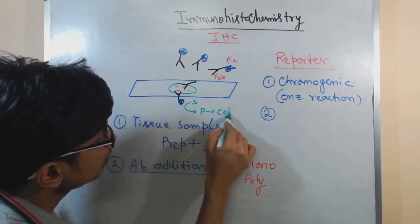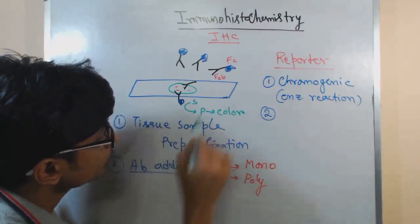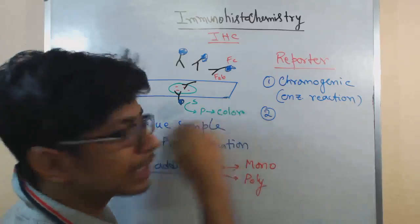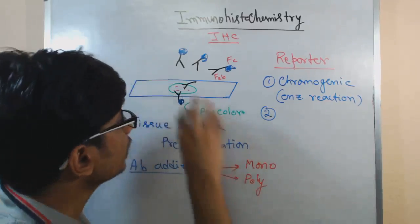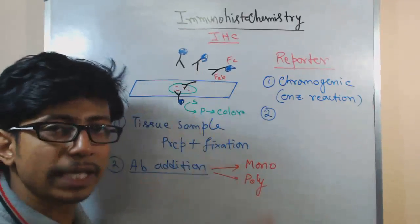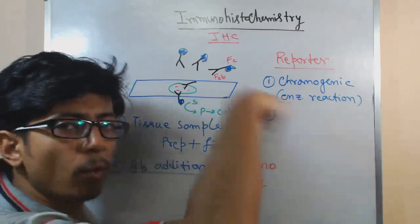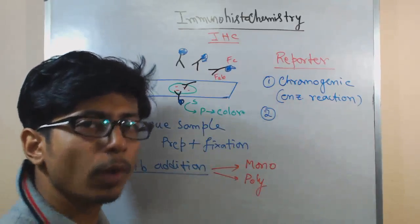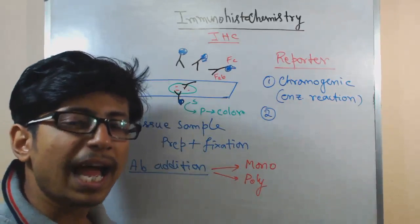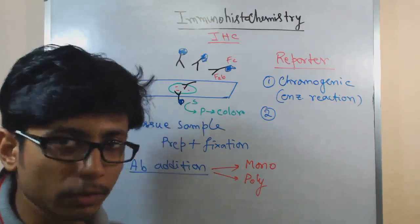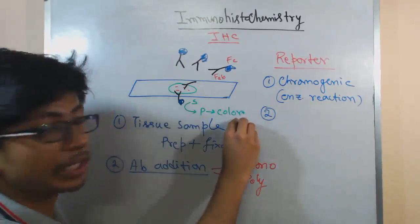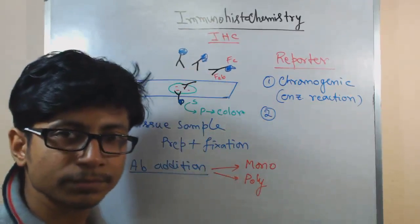Then we add the substrate of that enzyme, and the enzyme will act on the substrate and convert it into a product which gives us some color. By looking at the color, we can tell that yes, our antibody is specifically bound. If your antibody does not bind with any of the antigenic contents, then we wash — after adding antibody we wash every time — to dissolve all those unbound antibodies. Once washed, if it is not bound, everything will be washed off and you won't see any color formation.